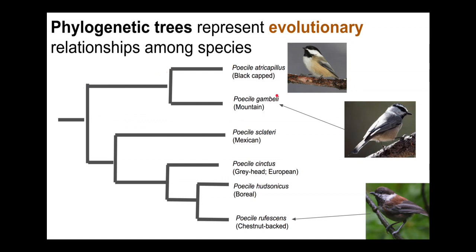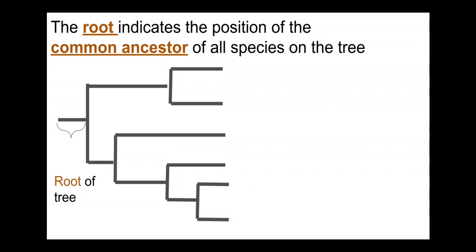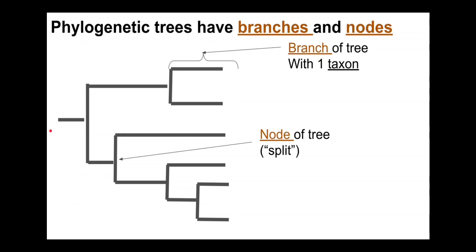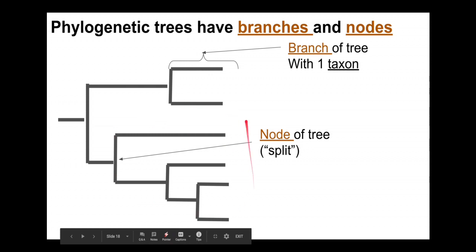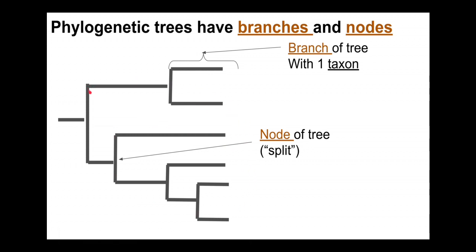We'll go forward using this phylogenetic tree without the Carolina chickadee for now. I'm going to go over some basic terminology related to phylogenetic trees. The root of the phylogenetic tree is at the base of the tree — not all phylogenetic trees have a root. It indicates the inferred common ancestor of all species on the tree. The tree is composed of branches, and branches split at nodes. So there's a node here, a node there, a node at the root, and so forth.